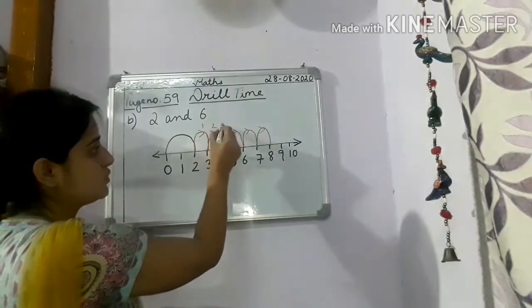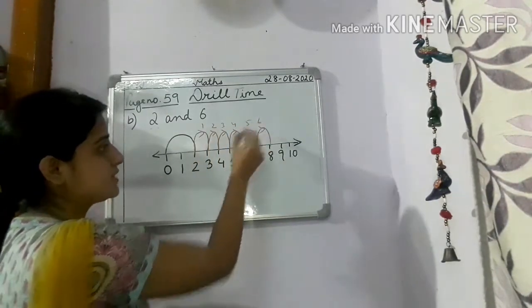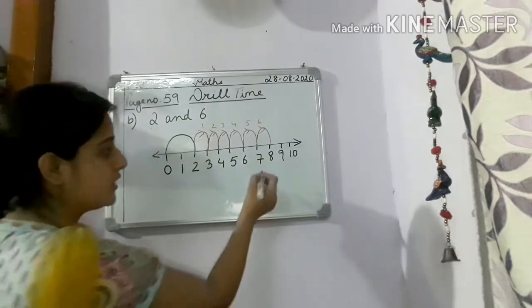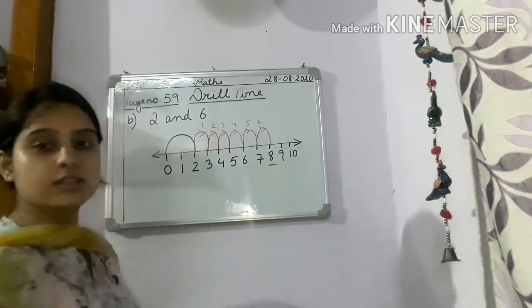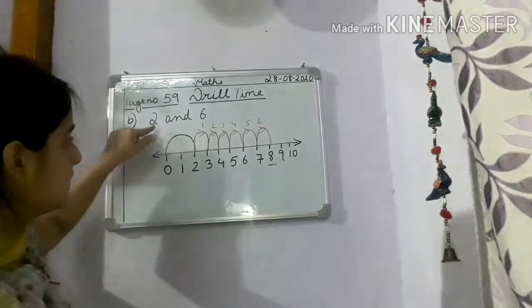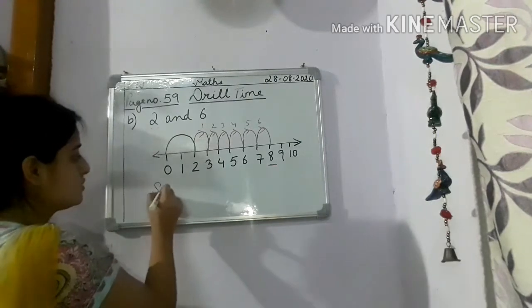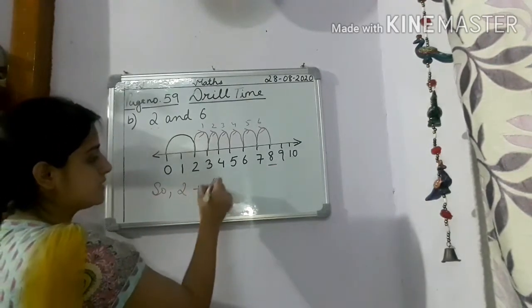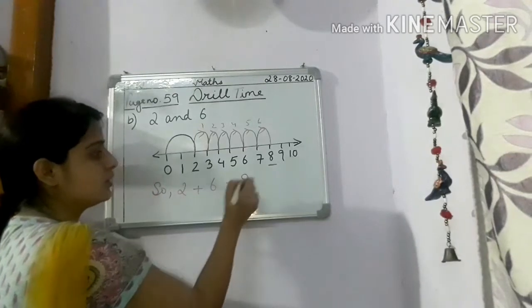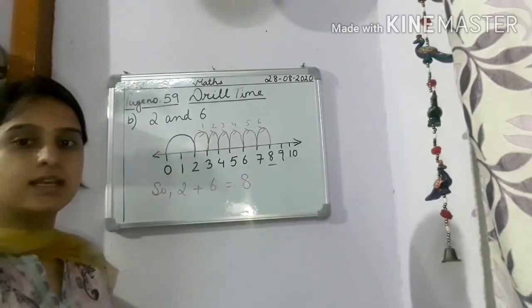1, 2, 3, 4, 5, 6. So children, where did it stop? On the number 8. So what is the sum? 2 plus 6 is equal to 8. Clear?